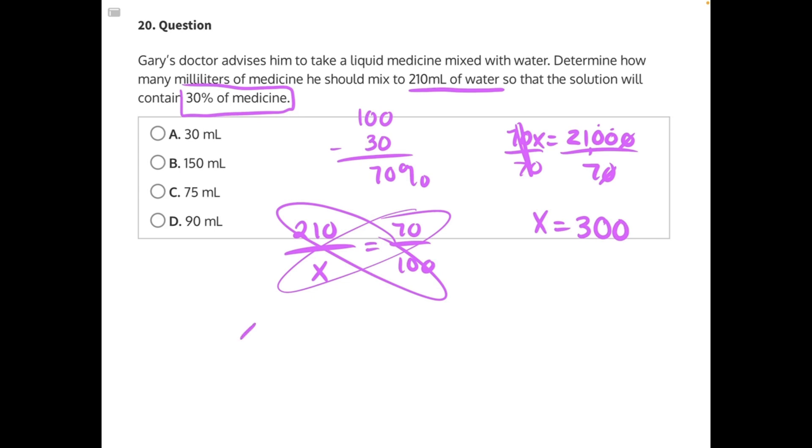So now we can set up one more proportional ratio to say how many milliliters out of 300 total milliliters would be equal to 30% out of 100, essentially telling us how many milliliters of medicine should we put into this mixture so that it is 30% of the entire mixture.